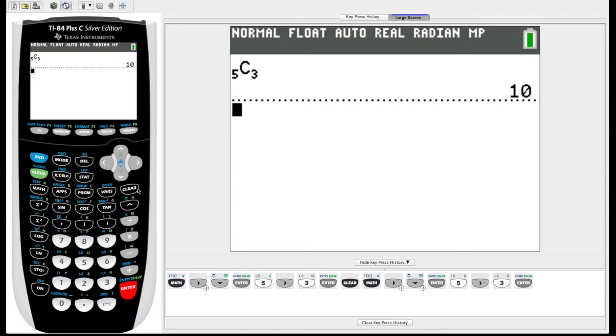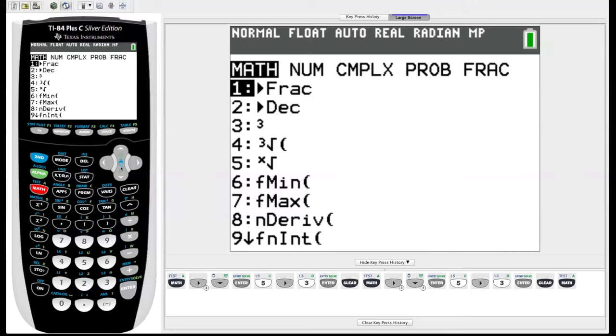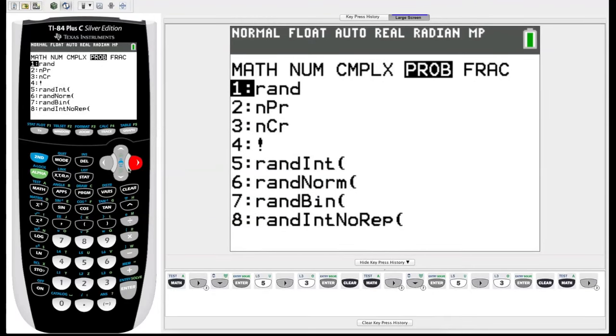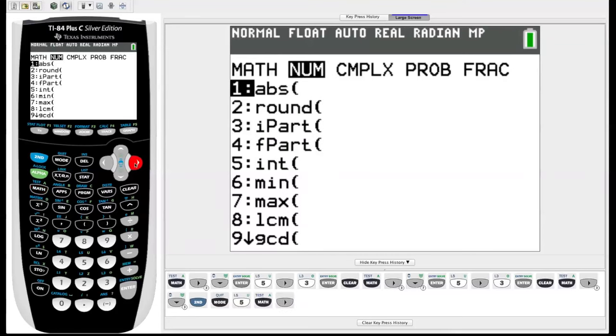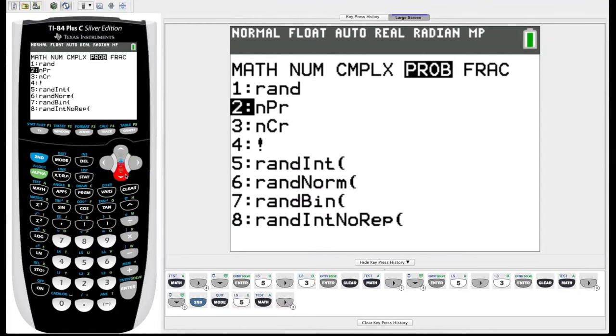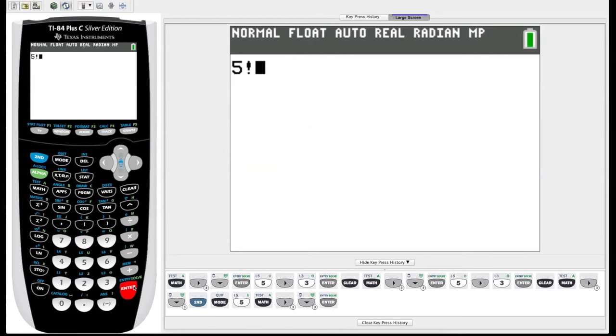Additionally in that probability menu there is a factorial key under four. If you're familiar with factorials, it multiplies all the numbers less than or equal to the number you give it. So we go back to our home screen, you have to enter a number first, say five, then go to the probability screen, arrow down to the exclamation point for factorial. Five factorial multiplies five times four times three times two times one, all the integers less than or equal to five. We hit enter and get 120.